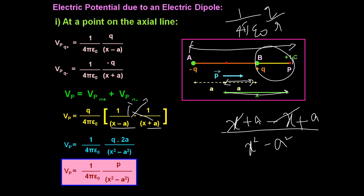This is the equation for electric potential due to an electric dipole at the axial line.